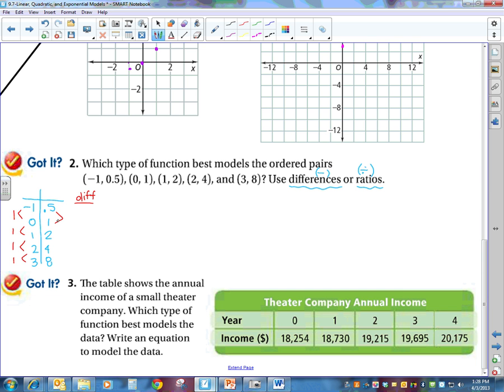This is what we call my first differences. And 1 minus 0.5 is 0.5. 2 minus 1 is 1. 4 minus 2, we always start with the last one and subtract the one that comes before it, is 2. And 8 minus 4 is 4. So those do not have a common difference.